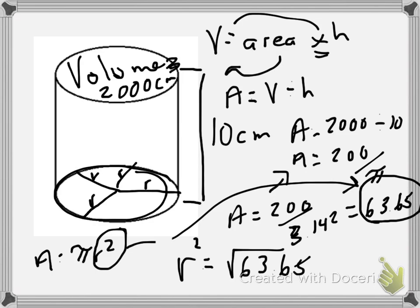So if we take the square root of 63.65, we end up with a radius of 7.98, and that's going to be centimeters.